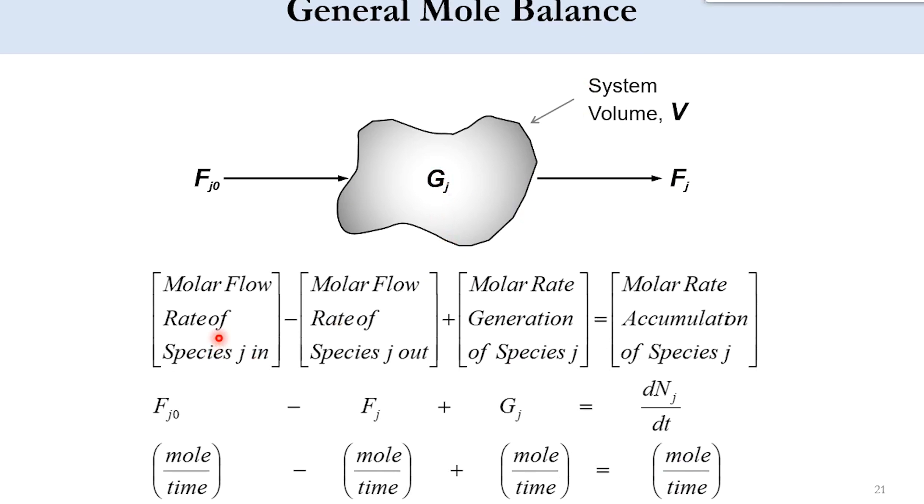Accordingly, molar flow rate of species j in minus molar flow rate of species j out plus generation equals accumulation. f_j unit is mole per time, generation g_j mole per time, and that is equal to the accumulation. Obviously for steady state systems, there is no accumulation, while for unsteady state systems, there is accumulation in the system.